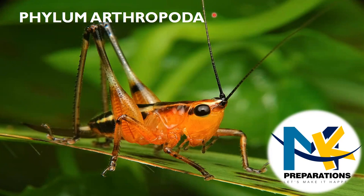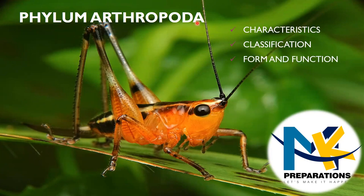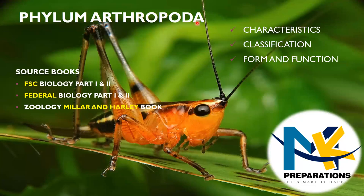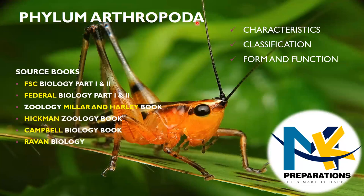In this topic we will discuss points related to Phylum Arthropoda. It includes general characteristics of arthropods, classification of arthropods, and form and function. The material has been taken from different source books like FSC biology, federal biology, zoology by Miller and Harley fifth or tenth edition, Hickman zoology, Campbell biology, and Raven biology.